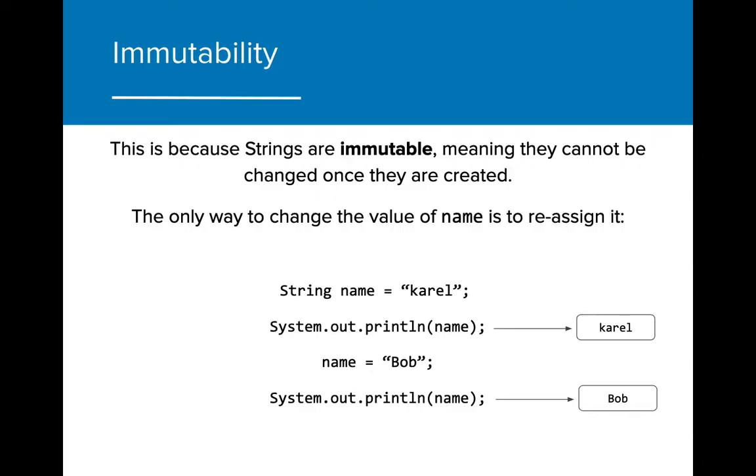The only way to change a string value is to reassign the variable with a different string value. In this case, we've reassigned name to be equal to Bob. The next time that name is printed, the value expressed will be Bob instead of Carol.